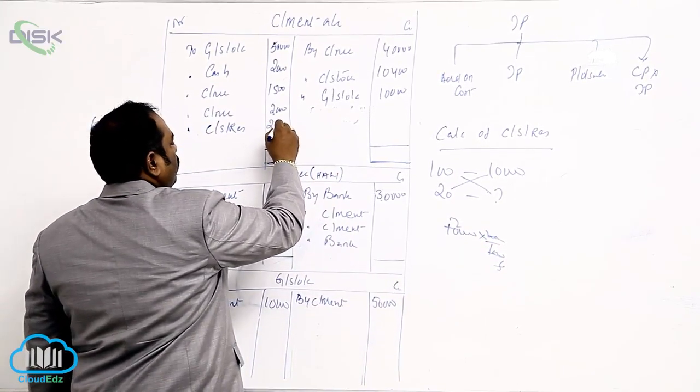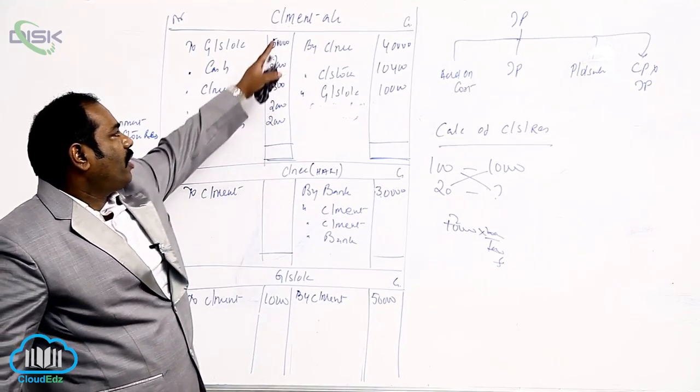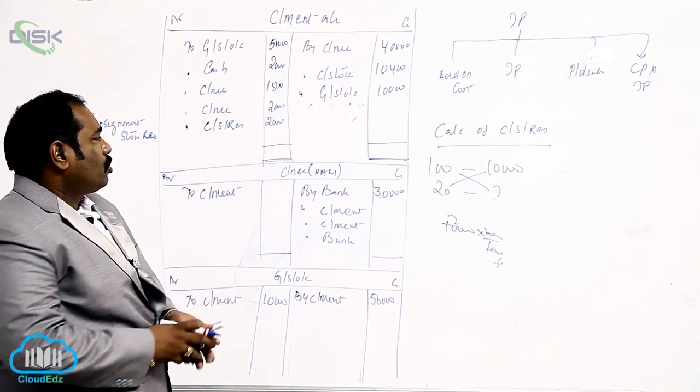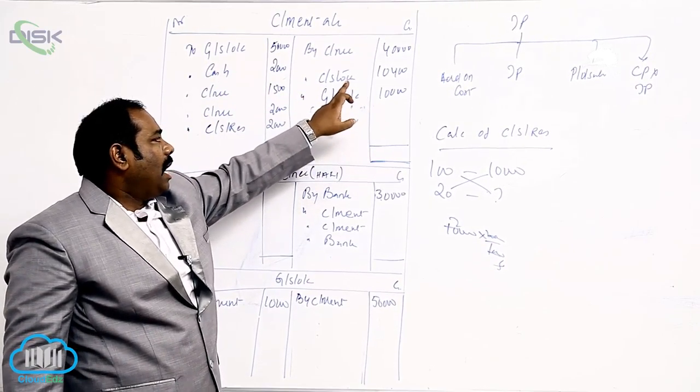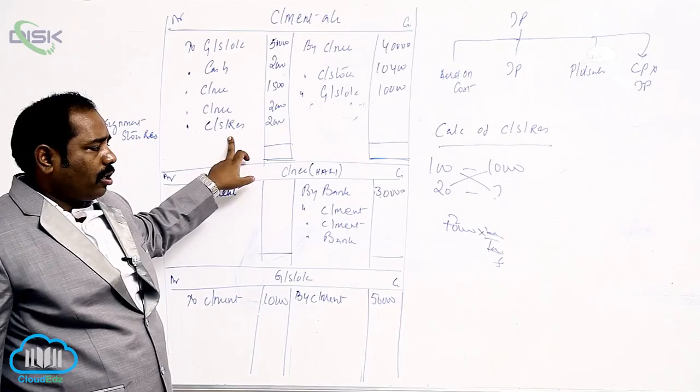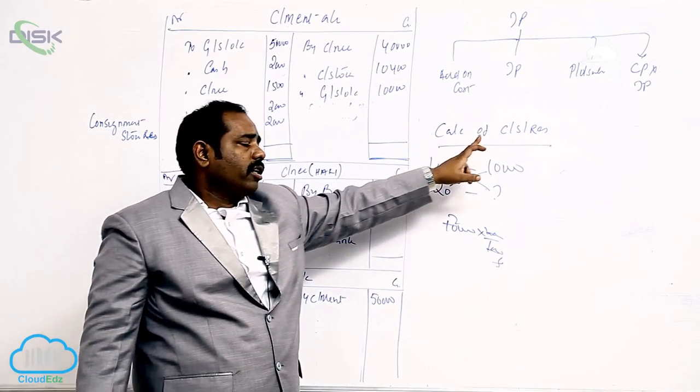So consignment stock reserve is what? 2,000. What is the extra entry? Consignment to consignment stock reserve. So we have got two additional entries. First one is what? For unloading of the unsold goods. And second one is what? Unloading of unsold stock. So calculation of consignment stock reserve is very important.